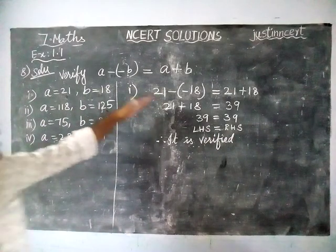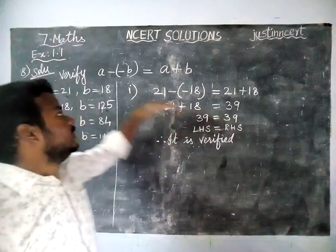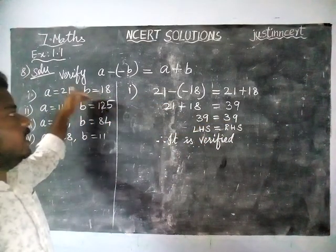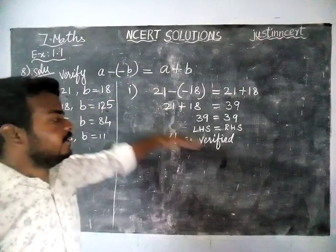When left hand side is equal to right hand side for the given values of A and B, this equation is verified.